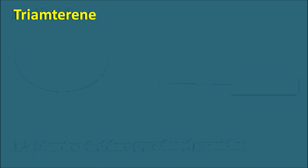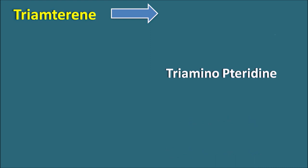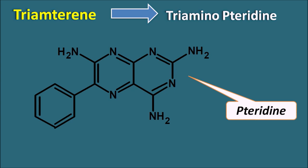The second drug is triamterene. The name can be remembered as triaminopteridine. It has a pteridine ring system with three amino groups. This is the structure of triamterene, and this heterocyclic ring system is called pteridine.